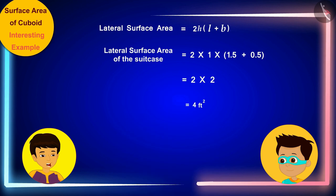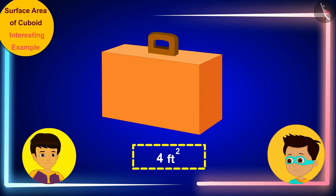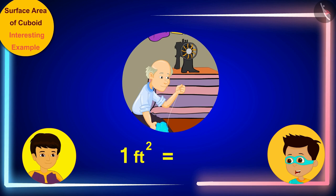I need four square feet of fabric to cover these surfaces of the suitcase. Well done. But it will cost you a lot of money to buy the cloth. Do you know that the tailor sells one square feet cloth for 40 rupees?